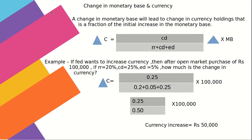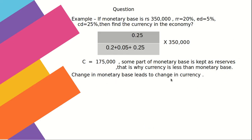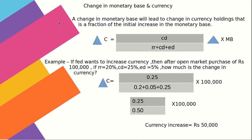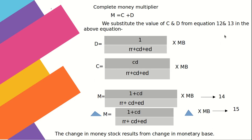Change in monetary base leads to change in currency holdings — a fraction of the initial increase in monetary base. The formula is: ΔC = [CD / (RR + ED + CD)] × ΔMB. For an open market purchase of 1 lakh with RR = 20%, ED = 5%, CD = 25%, the currency increase equals 50,000.